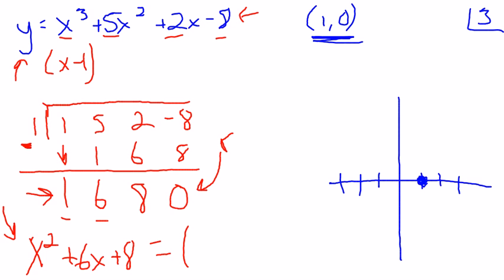So that factors to x plus 2 times x plus 4, which tells me that I have zeros. Oh, I didn't make enough. So I'll make this a little bit longer, put a tick. I have zeros at negative 2 and then at negative 4 as well.